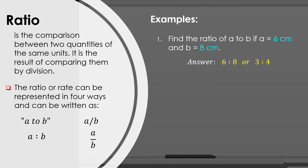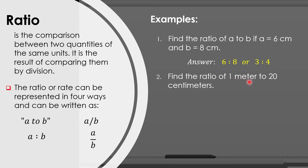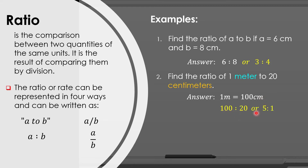Example number two: find the ratio of 1 meter to 20 cm. The units used are meters and centimeters, which are different. So to obtain the same units, let us convert first the meters into centimeters. Since 1 meter is equal to 100 cm, we use 100 cm to represent 1 meter. Therefore, the ratio will be 100 is to 20, or 5 is to 1 by getting the simplest form.